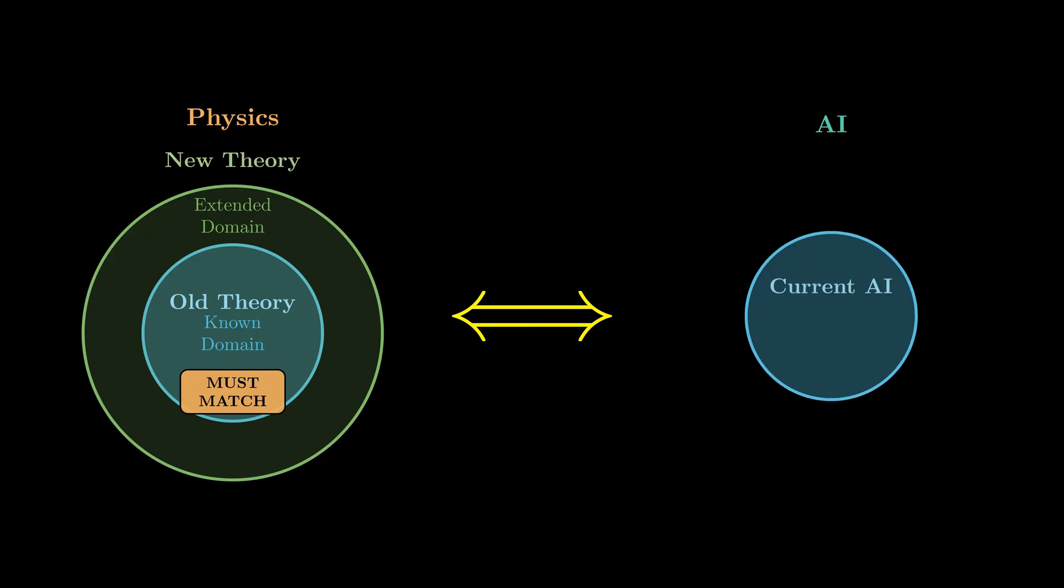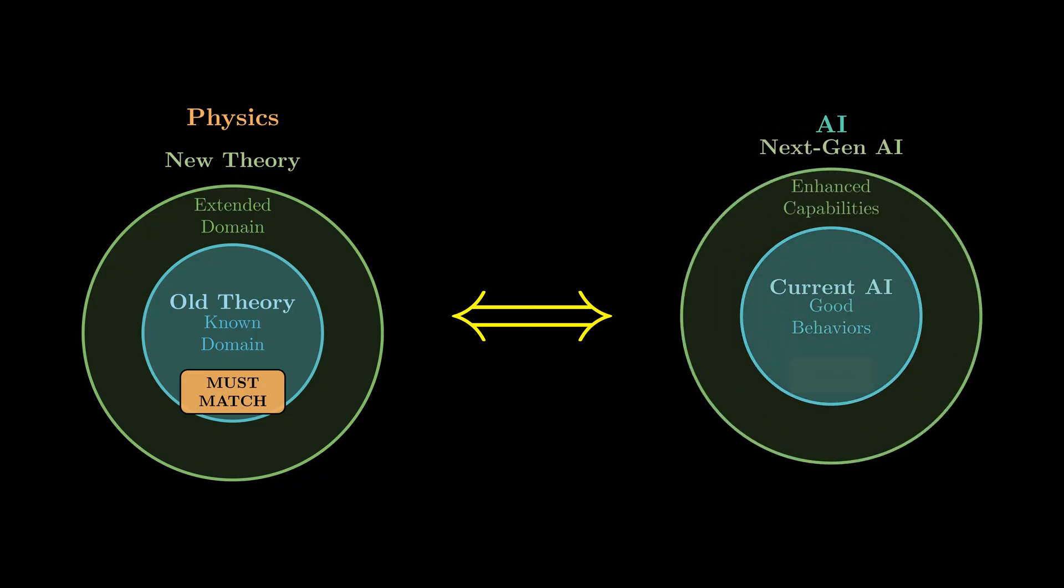Translating this idea to AI, next-generation AI models should fall back to current models when their behavior is well-understood and well-behaved. They should retain the impressive capabilities we already have. However, the problems that plague current systems should be systematically removed or rendered unstable in some principled way.